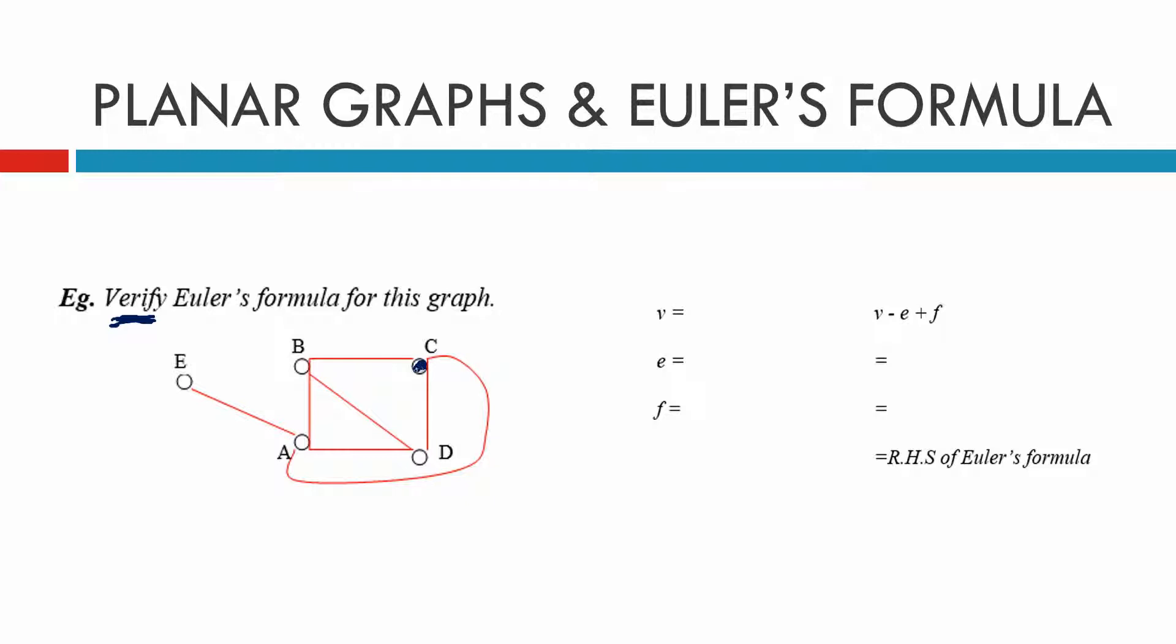Vertices. Remember, we just count how many nodes there are. Vertices, nodes, it's the same thing. That's 2, 3, 4 and 5. So there are 5 vertices in this one.